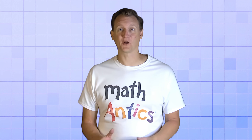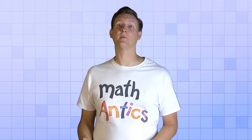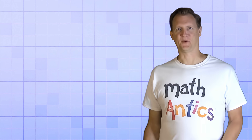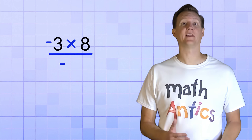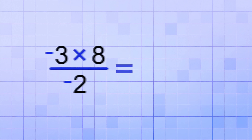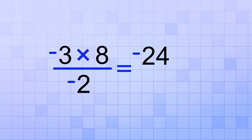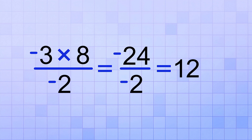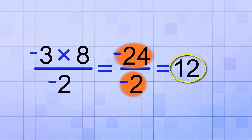Now for some more complicated examples combining both multiplication and division. It doesn't matter whether a negative factor is being multiplied or divided — you still count it when figuring out if you have an even or odd number of factors. Take the problem: negative 3 times 8 over negative 2. On the top, negative 3 times 8 is negative 24 — one negative factor. Then negative 24 divided by negative 2 is positive 12, since 24 divided by 2 is 12 and we have two negatives total, giving a positive answer.